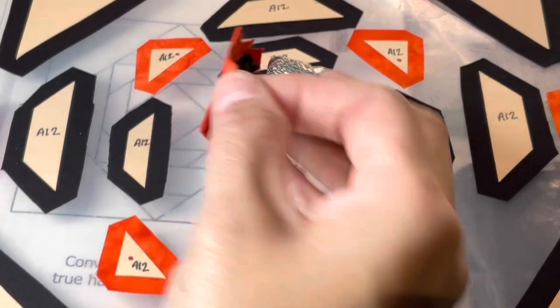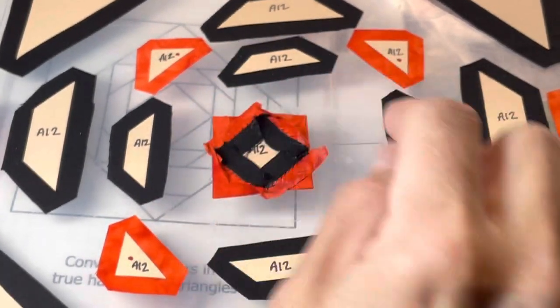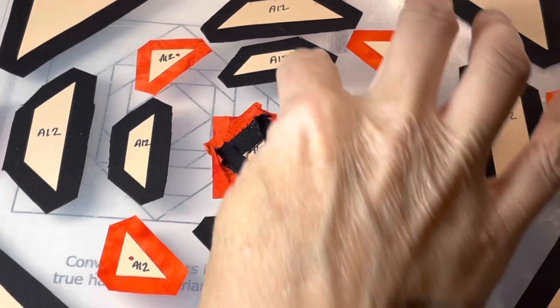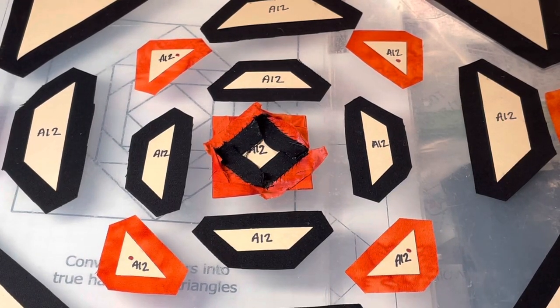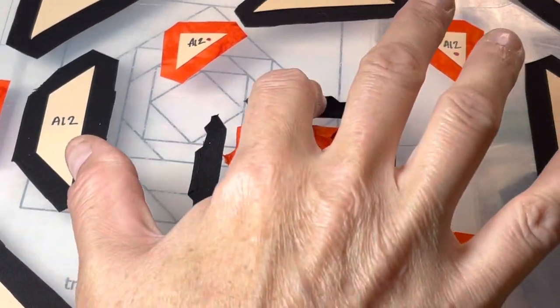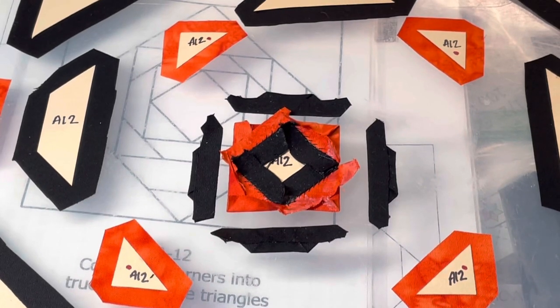So I've got my triangles on my center square, so the next thing to do is to add these pieces. So I will baste them and then get them ready to attach. So I basted my next round of pieces and now I will attach them to the center section.